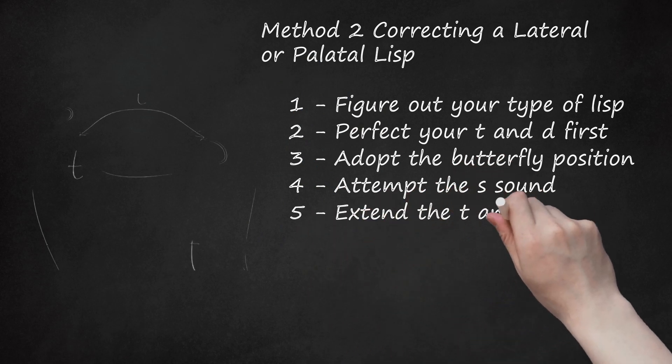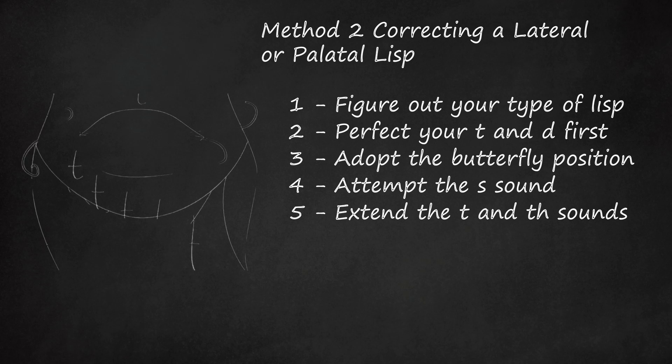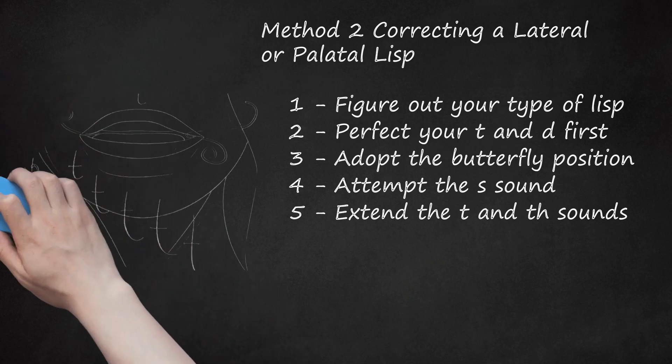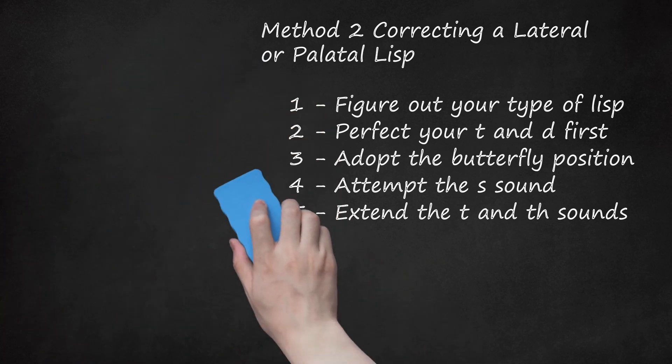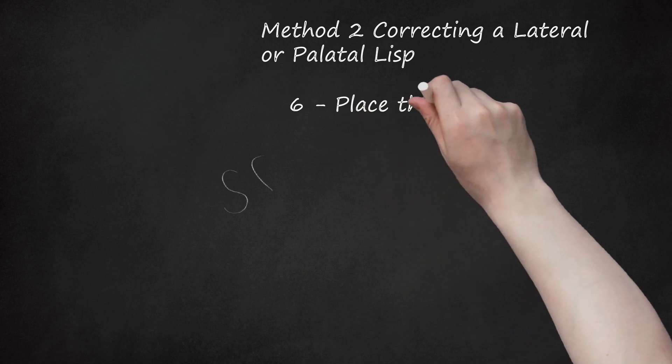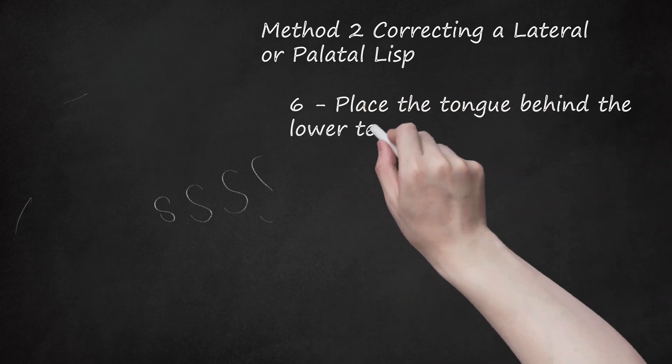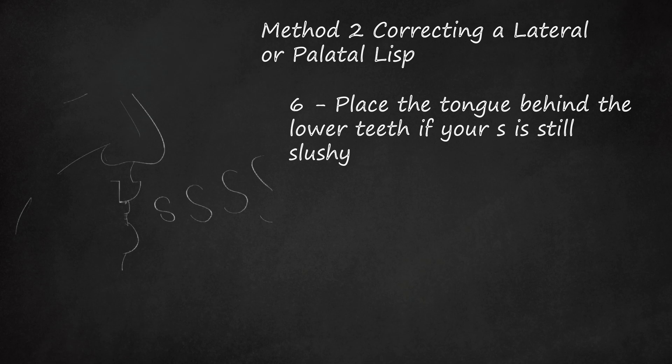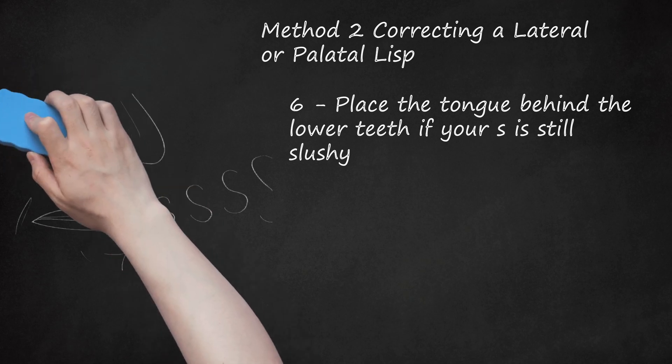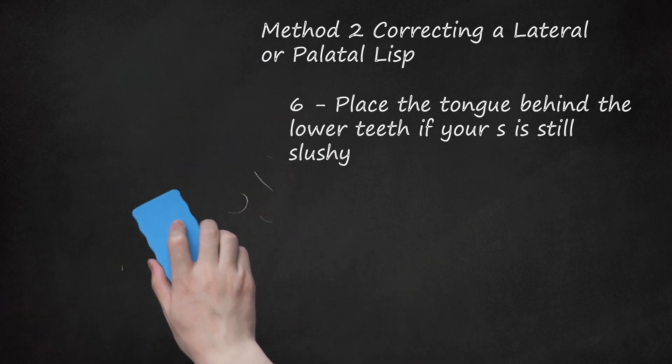Extend the T and TH sounds. Here are two more exercises which may help your tongue position. Prolong the T sound, then blow through it, producing a hiss of air. Say the TH sound, as in thing, but blow air through it, out the front of your mouth. Move the tip of your tongue backward along the roof of your mouth as you continue to blow. Place the tongue behind the lower teeth if your S is still slushy. Some people with lateral lisps may find it easier to produce a clear S sound with their tongue tip behind the lower front teeth. This may help the midsection of the tongue stay close to the roof of the mouth without touching it, allowing air to pass above it.